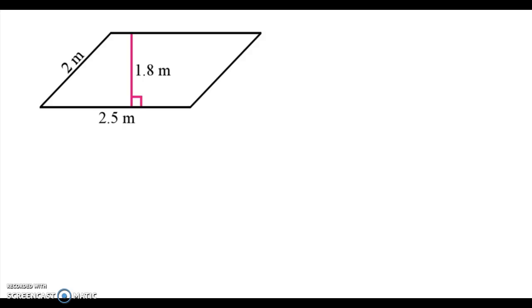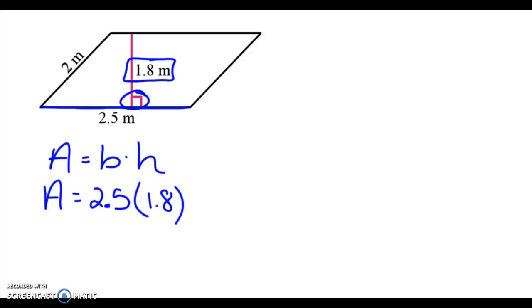Alright, for this one, I try to trick you up a little bit to see if you knew which one the base and which one the height was. So we're obviously going to use the 2 and a half for our base for this one. I'm going to write down the formula first. So my base is 2 and a half. And if you remember, the height always has to be perpendicular to the base. So that means I'm going to use 1.8 for my height. When I multiply those together, I get 4 and a half meters squared.